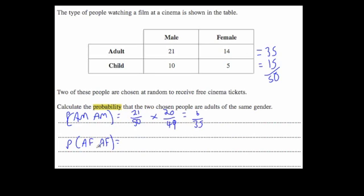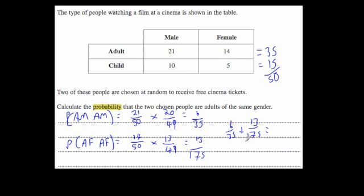For adult female and adult female: 14/50 times 13/49, which gives 13 over 175. Since it's either adult male-male or adult female-female, we add those probabilities together: 6/35 + 13/175 = 43 over 175. So the probability of choosing two adults of the same gender is 43 over 175.